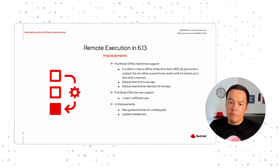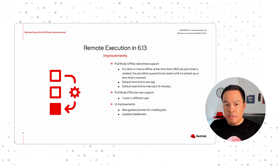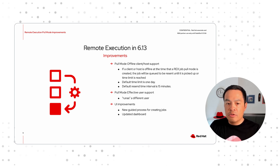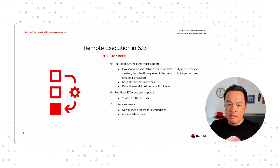We have further enhanced remote execution pull mode in Satellite 6.13. Remote execution pull mode, or REX pull, was introduced in Satellite 6.12. In the 6.13 release, REX pull can queue jobs for hosts that are periodically offline or disconnected from the Satellite capsule server. When the host is brought online and connected again, the queued job will be picked up from the capsule server and run. REX pull can now also run jobs with the run-as flag, so that you can run jobs as other users.